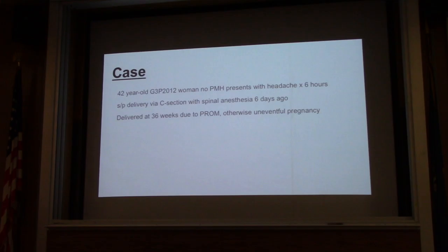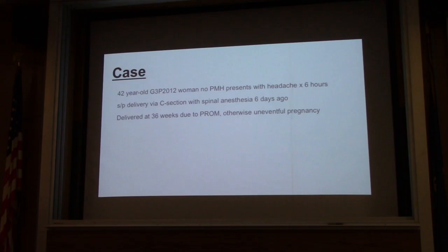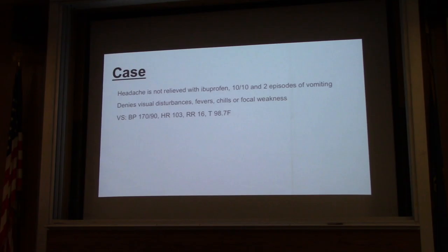As usual, we'll start off with a case. You have a 42-year-old G3P2012 woman with no past medical history presenting to your ER with a headache for the past six hours. She was diagnosed and delivered via C-section with spinal anesthesia about six days ago, delivering at 36 weeks due to premature rupture of membranes. It was an otherwise uncomplicated pregnancy and the baby was doing well. She was doing well until the headache started.